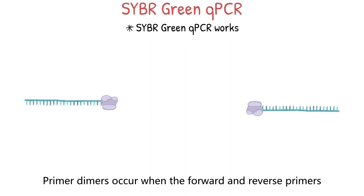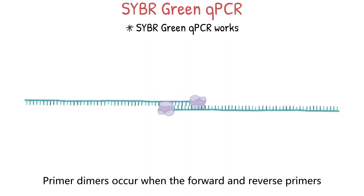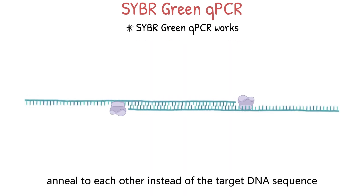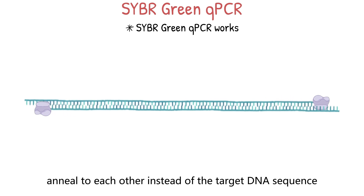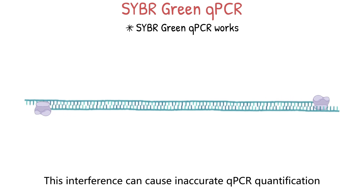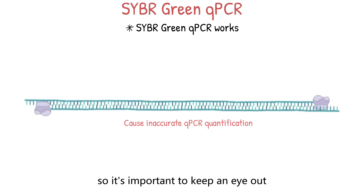Primer dimers occur when the forward and reverse primers anneal to each other instead of the target DNA sequence. This interference can cause inaccurate qPCR quantification, so it's important to watch for them during melting curve analysis.